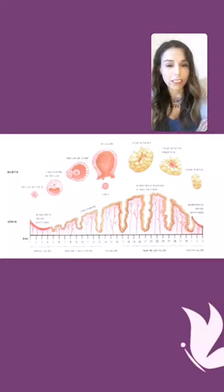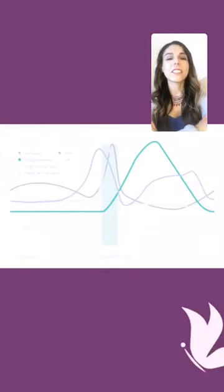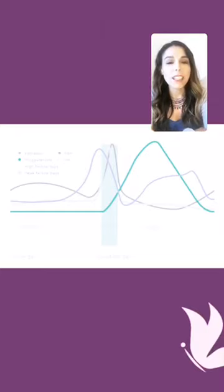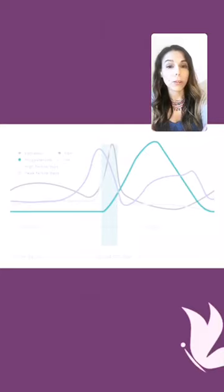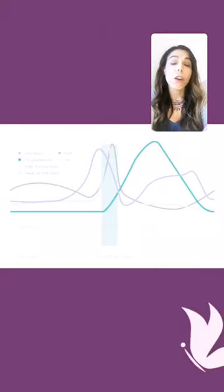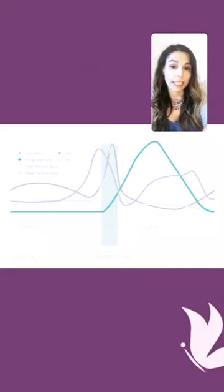I'd like to share the next image with you. This image has a lot of curves, and these curves represent your hormones. All the changes happening in the ovaries and uterus during the menstrual cycle depend on the levels of your hormones. There are certain hormones that are very important for the development of follicles and eggs, for ovulation itself, and for the uterus to be thick enough to allow the fertilized egg to implant.